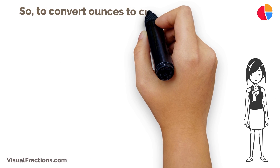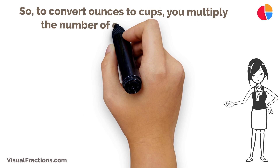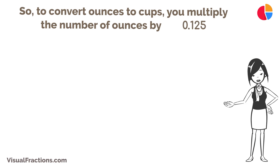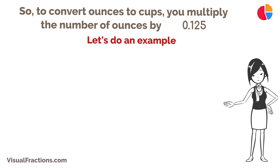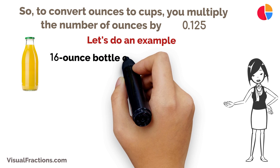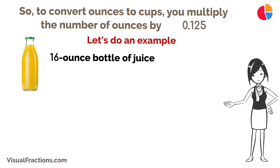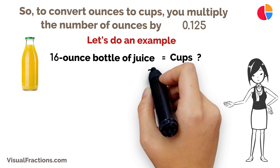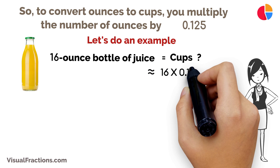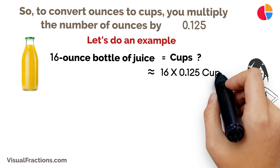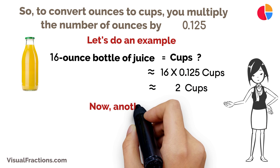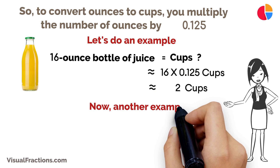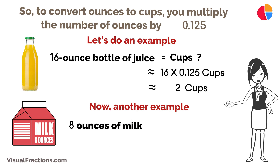To convert ounces to cups, you multiply the number of ounces by 0.125. For example, if you have a 16-ounce bottle of juice and you want to know how many cups that is, just multiply 16 ounces by 0.125 — that gives you 2 cups.